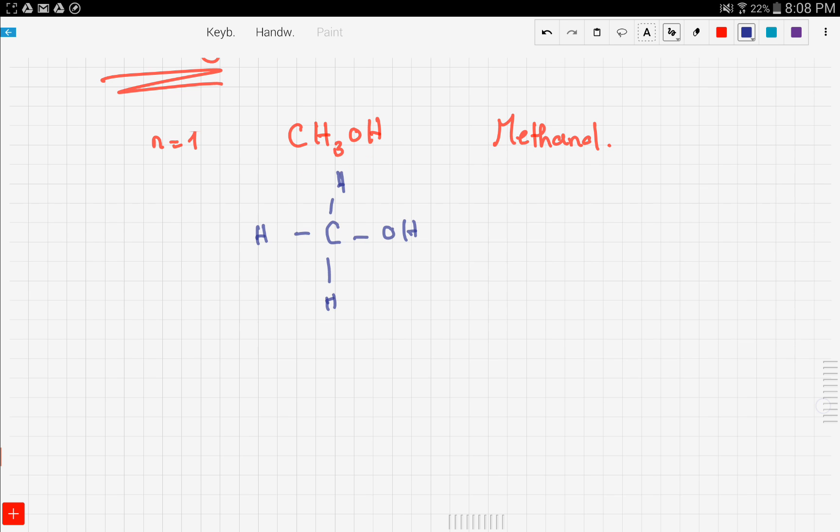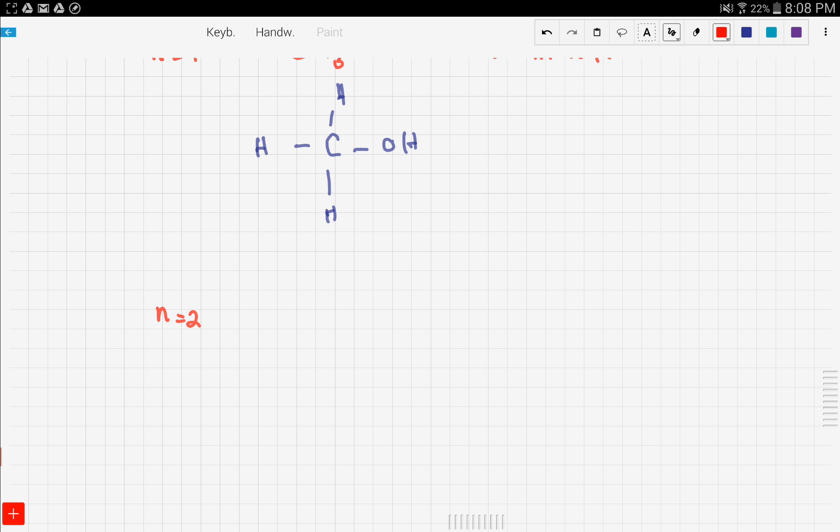So the second member, using the formula together, if you want to pause the video and do it yourself go ahead. It's gonna be C2H5OH. How do we name that? We have two carbons so we're gonna call it an eth, and since it's an alcohol it has an OH, so it's ethanol.